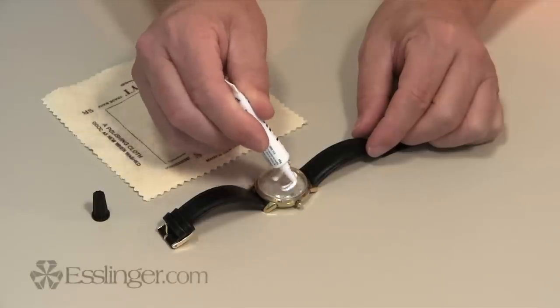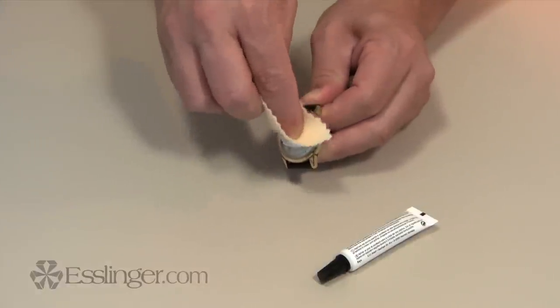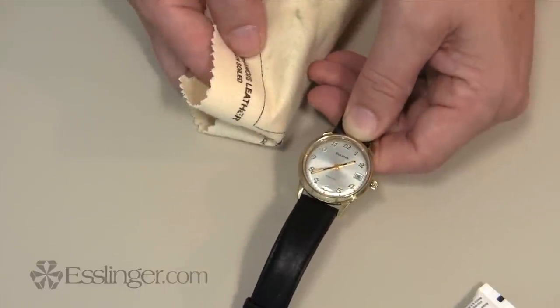Simply apply the PoliWatch polish to the plastic watch crystal and polish it with a cotton cloth for two to three minutes. When you remove the cotton cloth, the plastic crystal will sparkle and shine like new.